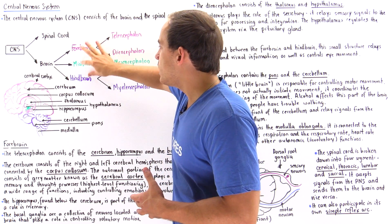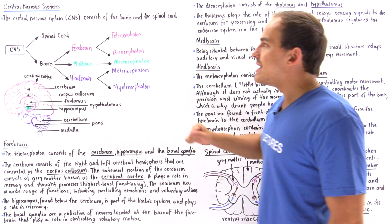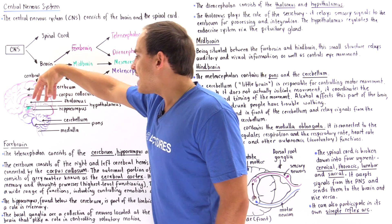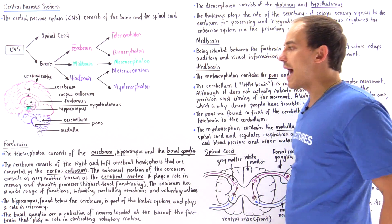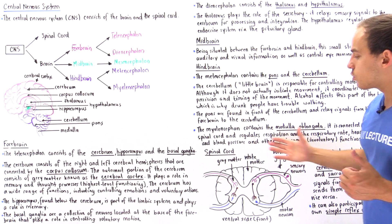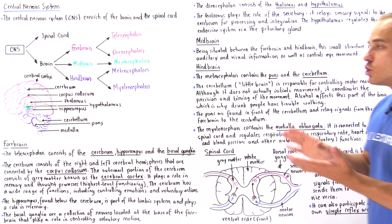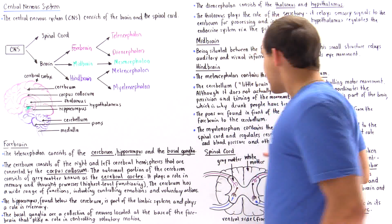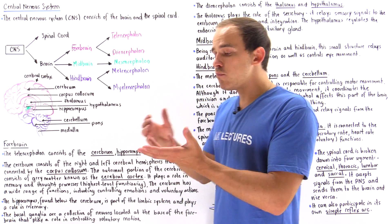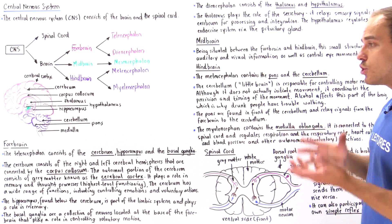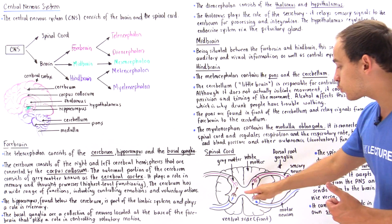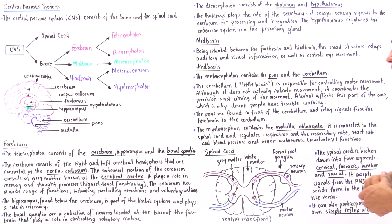So we have the forebrain, the midbrain, and the hindbrain. Now let's discuss the spinal cord, which is found below the medulla and extends down to the lower back. Taking a cross-sectional view, we see that just like the brain, the spinal cord consists of white and gray matter, as well as bone, cartilage, and neurons. White matter means neurons have myelination on their axons, while gray matter neurons do not.